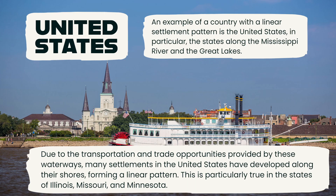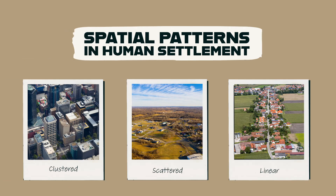An example of a country with a linear settlement pattern is the United States, in particular the states along the Mississippi River and the Great Lakes. Due to the transportation and trade opportunities provided by these waterways, many settlements have developed along their shores, forming a linear pattern. This is particularly true in Illinois, Missouri, and Minnesota, where the Mississippi River and the Great Lakes have played a vital role in regional economic development.